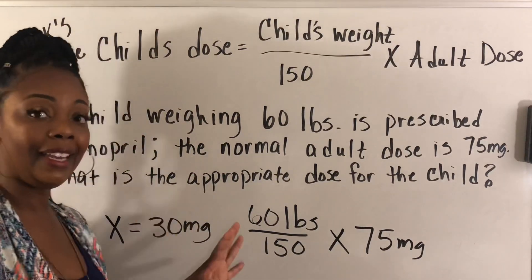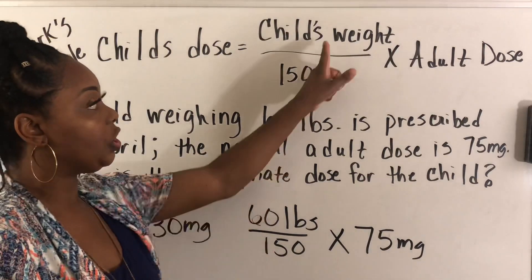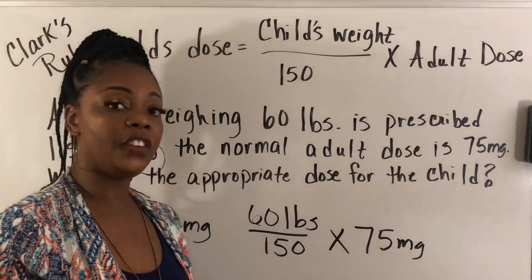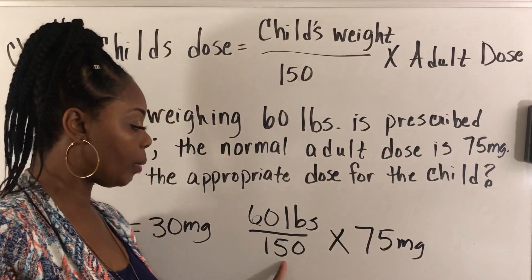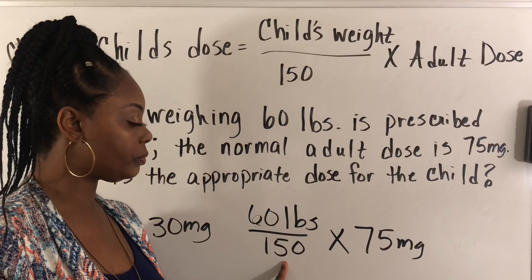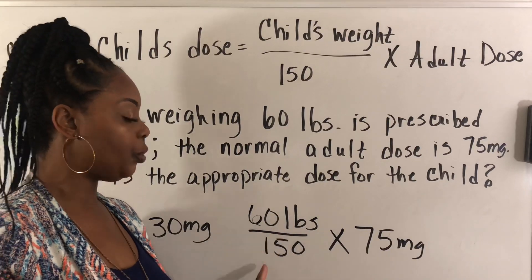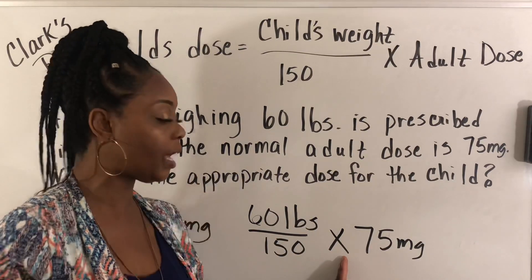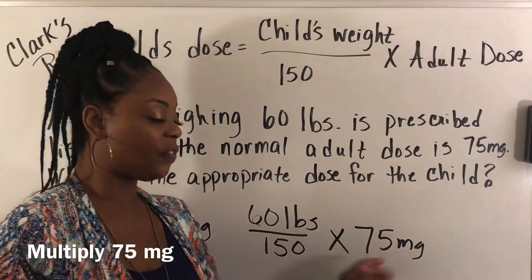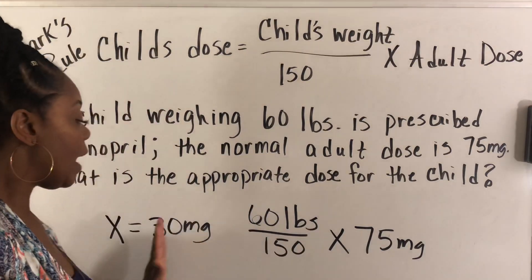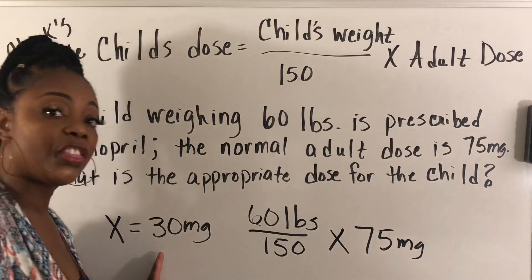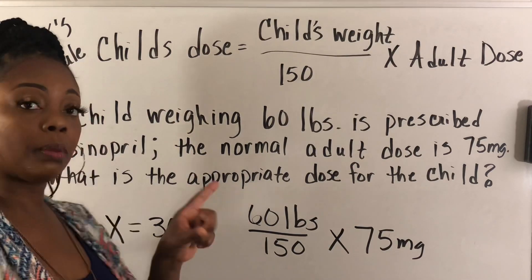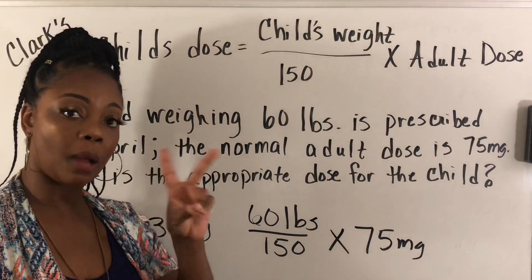To recap: the child's weight is 60 pounds, divide by 150 from the formula, then multiply by the adult dose of 75 milligrams — the child's dose is 30 milligrams. That's problem number one. Let's go to problem number two.